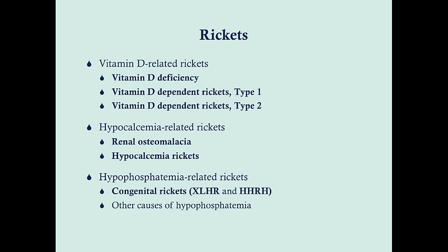On the USMLE, rickets questions will probably be in the context of hypocalcemia, osteomalacia, or vitamin D deficiency — primary or secondary. But because the USMLE loves physiology, you may get asked about less common forms of rickets that test your knowledge of physiology. They'll give you the labs and you'll have to deduce the cause, so get ready for a hearty dose of physiology in the upcoming slides.